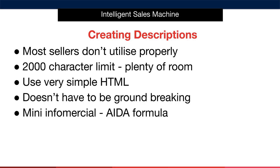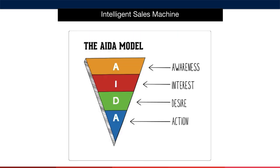The formula I'm talking about is of course the AIDA formula. AIDA stands for awareness, interest, desire, and then action. You've likely already got your customer's awareness with your title and your images. Your bullets help them develop their interest. You'll now use your benefit-driven descriptions to build a desire to purchase your product, and then close out your description with a call to action.